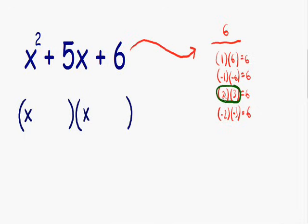These two numbers, positive 2 and positive 3, are the two numbers that we need to place inside the parentheses. I'm going to place my positive 2 and positive 3 on the right side of the parentheses.